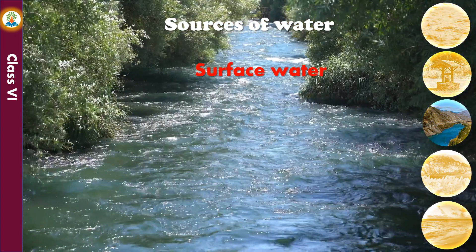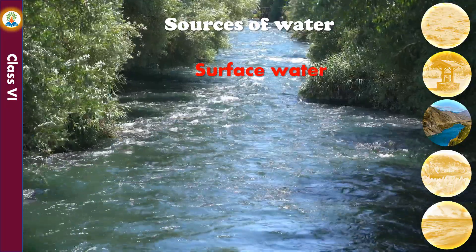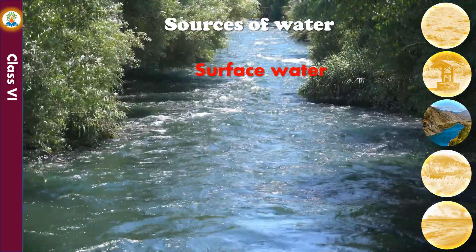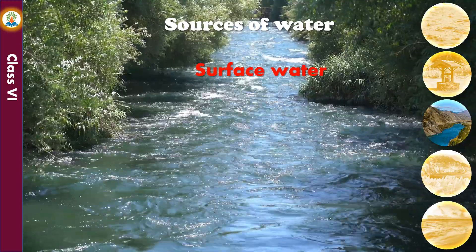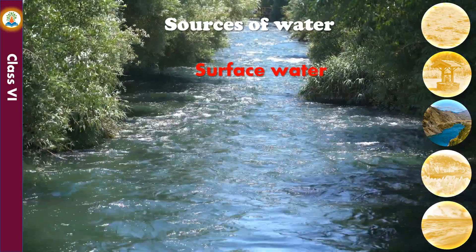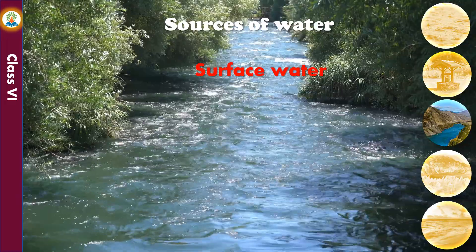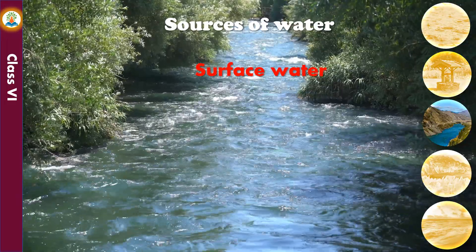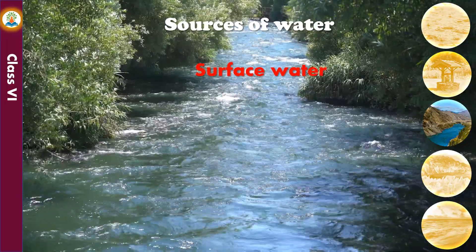Water present on the surface of the earth in the form of oceans, rivers, lakes, ponds, and streams is called surface water. The water in rivers and lakes comes from rain and snow melting on mountains. Surface water accounts for 80% of the water we use.